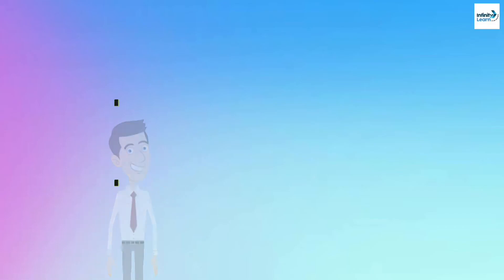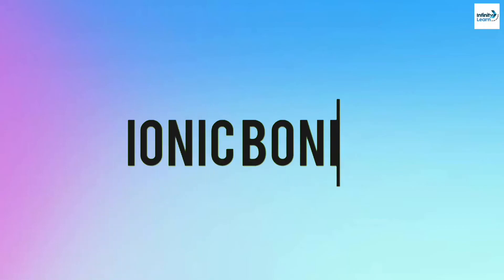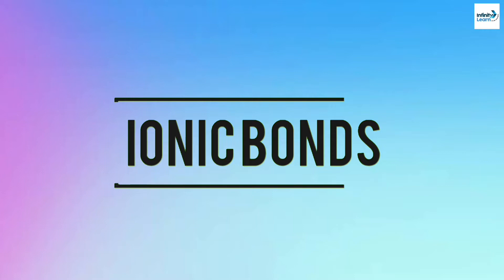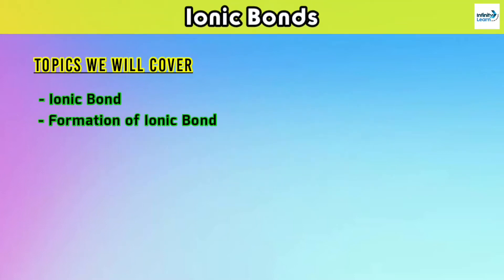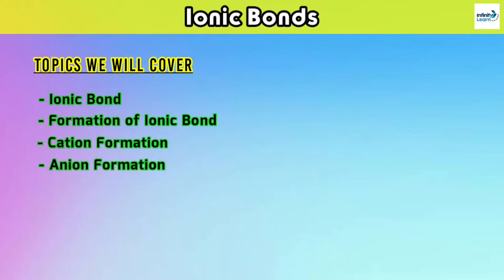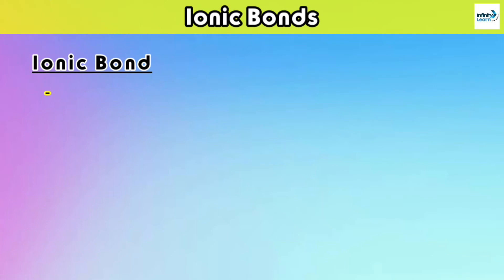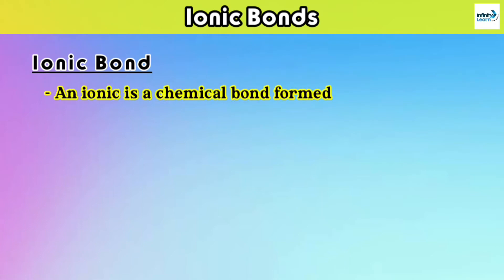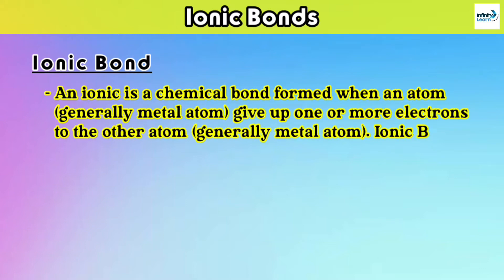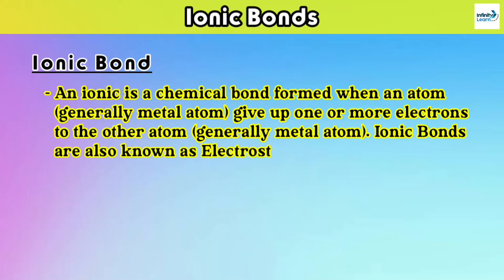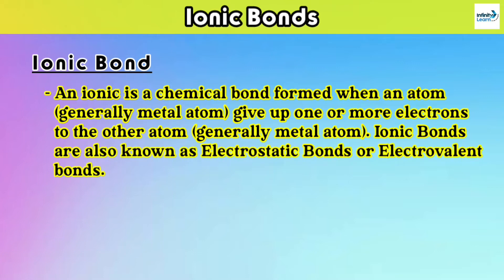Today we are going to talk about ionic bonds, in which we will learn about four terms: ionic bond, formation of ionic bond, cation formation, and anion formation. An ionic bond is a chemical bond formed when an atom gives up one or more electrons to another atom. Ionic bonds are also known as electrostatic bonds or electrovalent bonds.